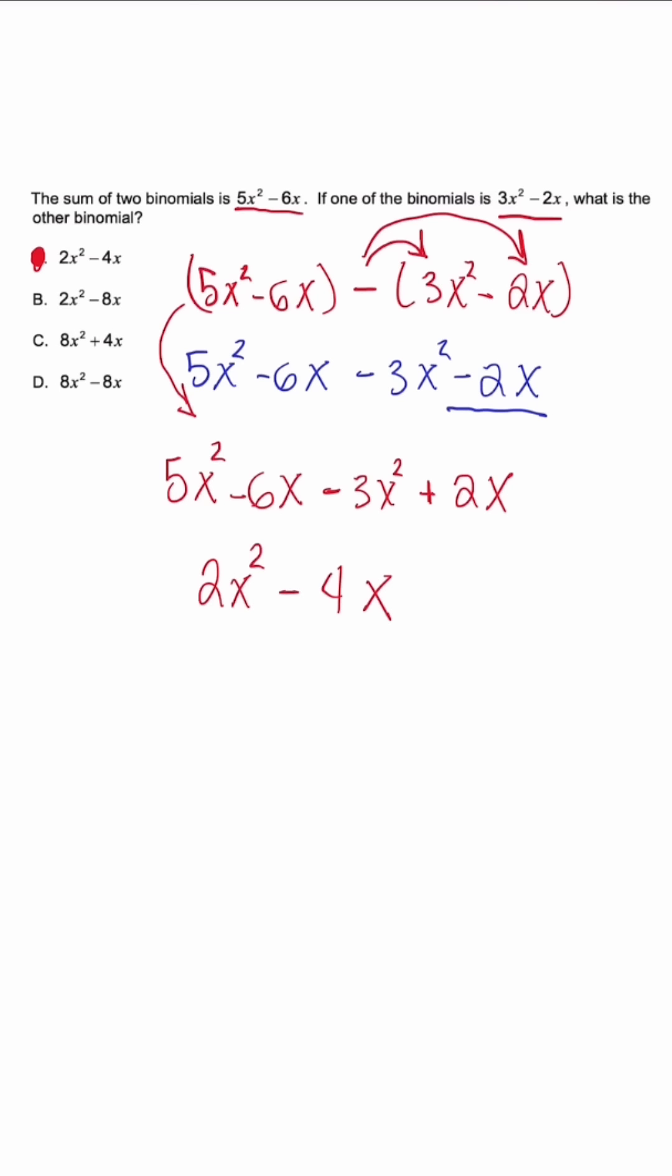However, if you did it like in blue, when you combined negative 6x and negative 2x, you would have gotten negative 8x and you could have possibly gotten B as an answer choice. Please be mindful of this.